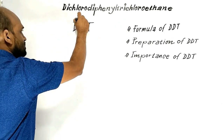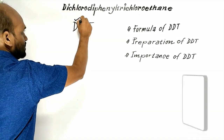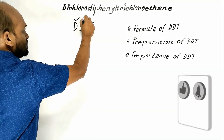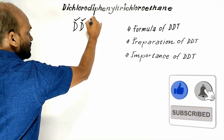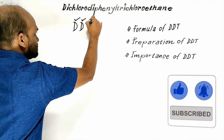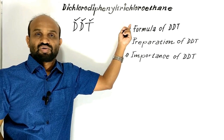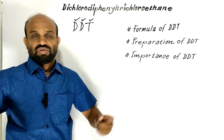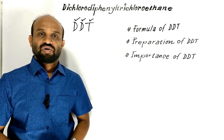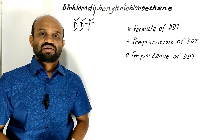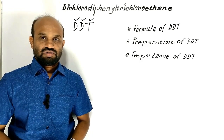This D from dichloro, another D from diphenyl, and this T from trichloroethane. So the abbreviated form of dichloro diphenyl trichloroethane is DDT.